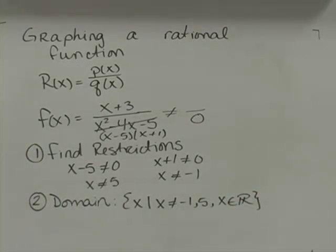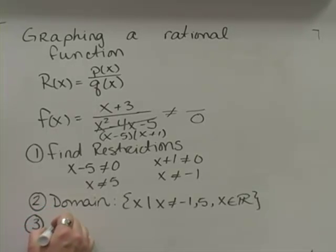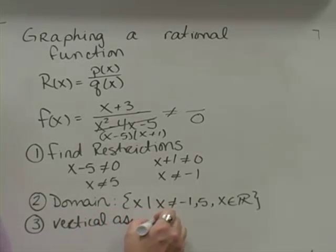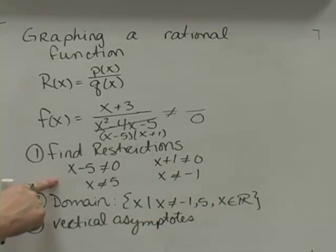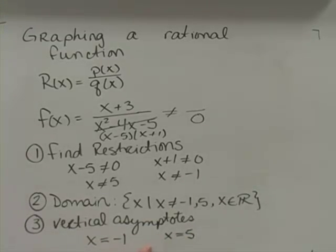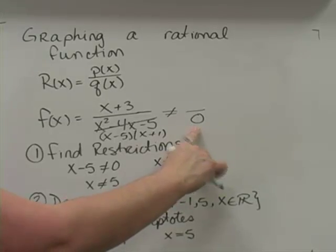Once I've found my domain, I can find my vertical asymptotes. My vertical asymptotes come from my restrictions — they are the restrictions. I have a vertical asymptote at x equals negative 1 and a vertical asymptote at x equals 5. When I go to graph these, I'm going to have an imaginary vertical line at negative 1 and at 5, because if x were negative 1 or 5, we would have an undefined function.